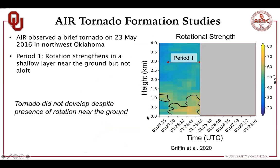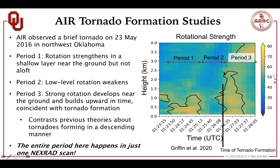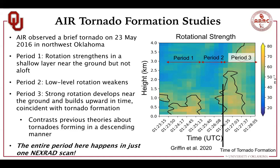During the first period, rotation is confined mainly to the lowest half mile to a mile of the atmosphere, and despite some rotation being present near the ground, a tornado did not develop — there's relatively weak rotation aloft. Then the rotation begins to weaken, not sustained for more than about a minute and a half. When the tornado actually forms, it develops pretty rapidly in the lowest two and a half kilometers of the atmosphere. After developing in this region over about a minute, it proceeds in an upward fashion through the rest of the storm. This contrasts previous theories about tornadoes forming in a descending manner and is consistent with previous work done with the OU RaXPol radar by Howie Bluestein's group.